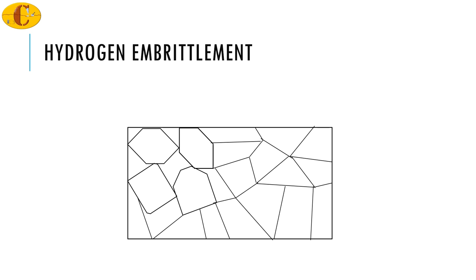Hydrogen embrittlement usually involves formation of hydrogen atoms which go to the surface of the metal and get absorbed over there. Because the hydrogen atoms are really the smallest atoms known to date, it is easy for them to get diffused into the steel and get absorbed at the grain boundaries. It is primarily this formation of hydrogen atoms at the grain boundaries that leads to the loss of strength for these steels.